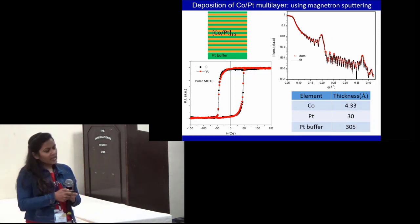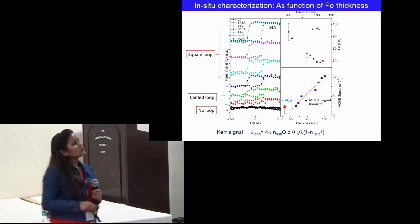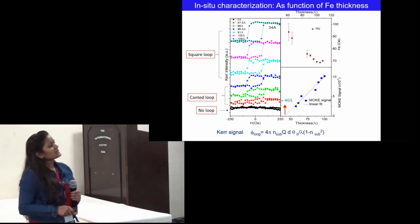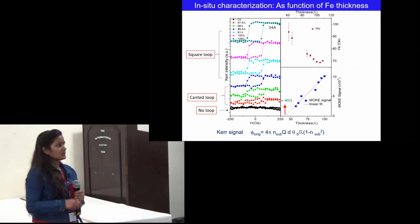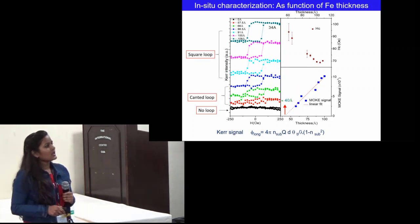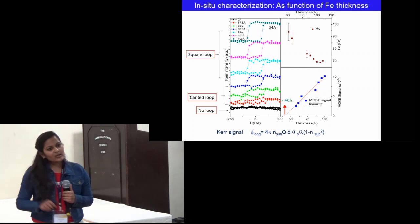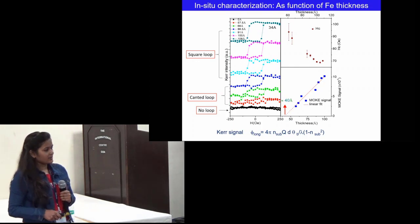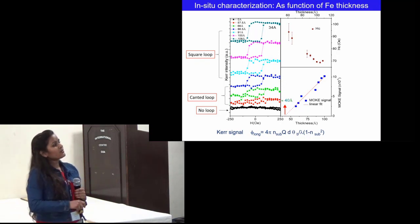Above this layer we deposited an Fe layer and monitored its growth using MOKE as a function of thickness. We observed that up to a certain thickness no hysteresis loop was observed, then slightly canted hysteresis loops were obtained, which further developed into square hysteresis loops as the thickness increased. If we plot the MOKE signal as a function of thickness, we observe that around 40 Å the Fe layer was strongly pinned by the CoPt multilayer and does not participate in the magnetization reversal. All the hysteresis loops are symmetric with respect to the field axis, showing no preferential pinning by the hard magnetic layer.